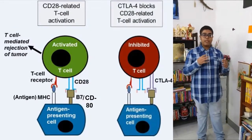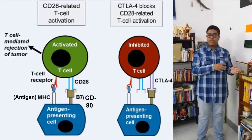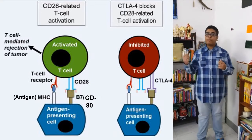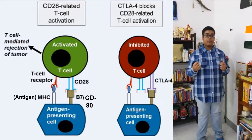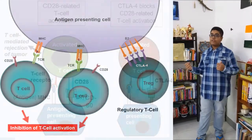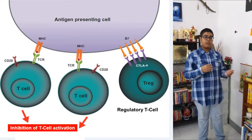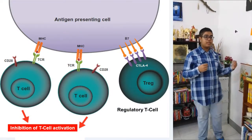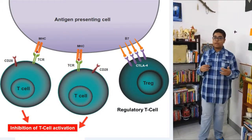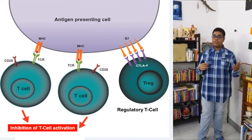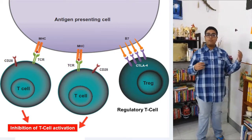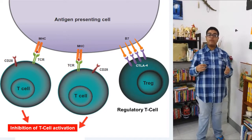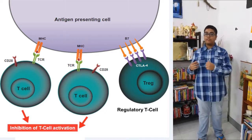CTLA4 works by competing with CD28 for CD80 and CD86, thus preventing the T cell from being activated. Cancer cells utilize this pathway to their own advantage by increasing the number of regulatory T cells in their environment. These regulatory T cells, which have a greater number of CTLA4 receptors on the surface, prevent the activation of T cells.